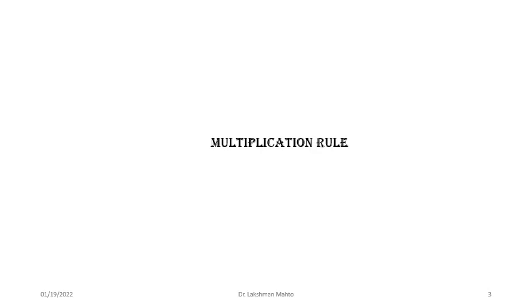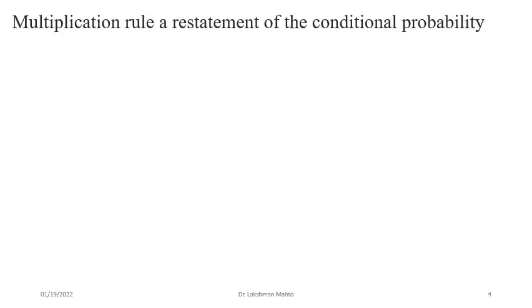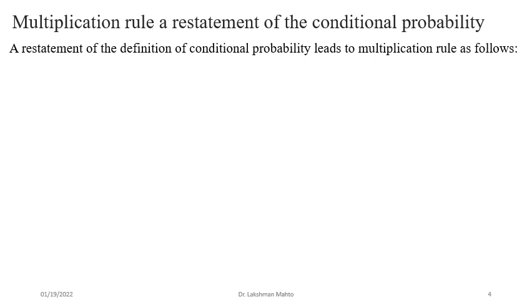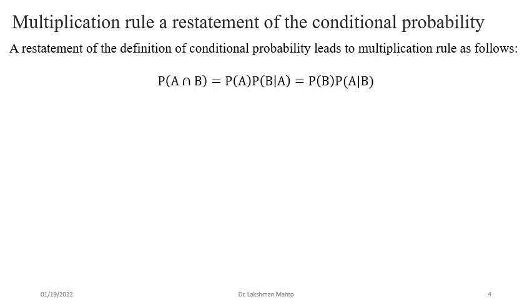Coming to the multiplication rule — what does it talk about and how do we define multiplication? Everyone has already seen the definition of conditional probability, so we try to re-state that definition and see that it becomes the multiplication rule. As mentioned in the last class, the definition of conditional probability can be rephrased as a multiplication rule — a re-statement of the definition of conditional probability that leads to a multiplication rule.